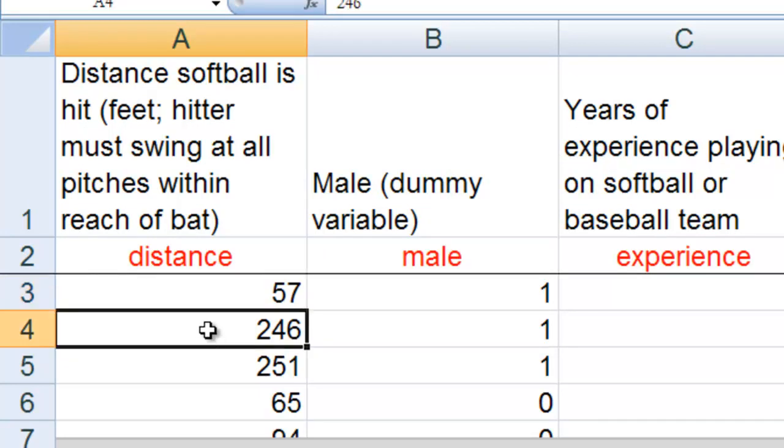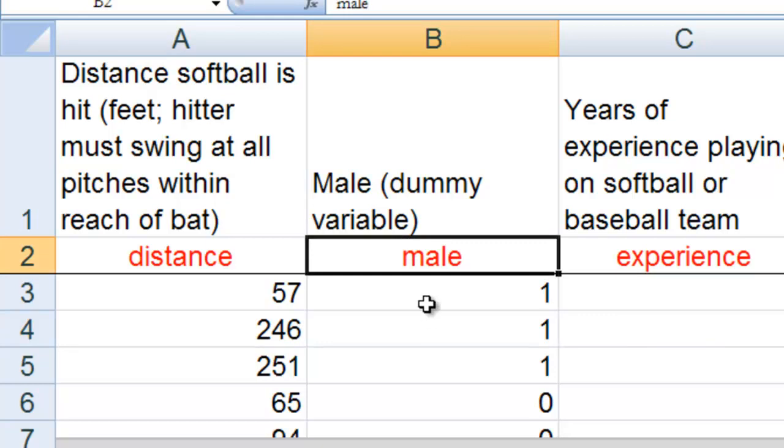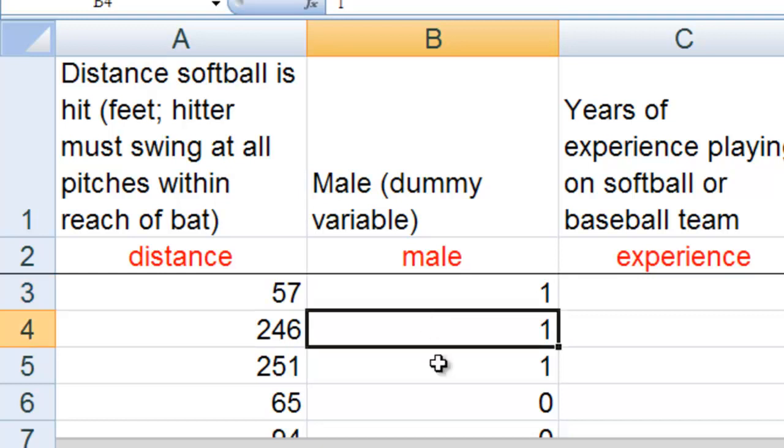We also have data on a male dummy variable, and this is a variable that equals one if the hitter is male,